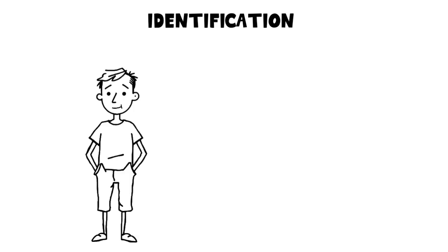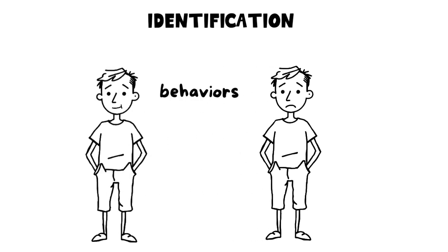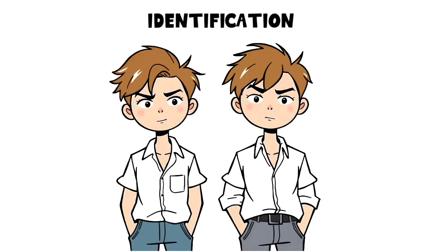Identification. Identification occurs when a person unconsciously adopts the behaviors, traits, or attitudes of someone they admire or fear. A bullied child might start dressing or speaking like their aggressor.